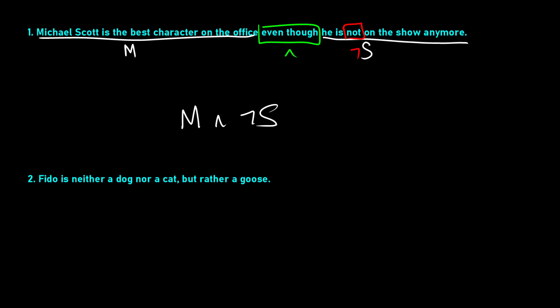So: Michael Scott is the best character on The Office, and Michael Scott is not on the show anymore. Next, question two: Fido is neither a dog nor a cat, but rather a goose.